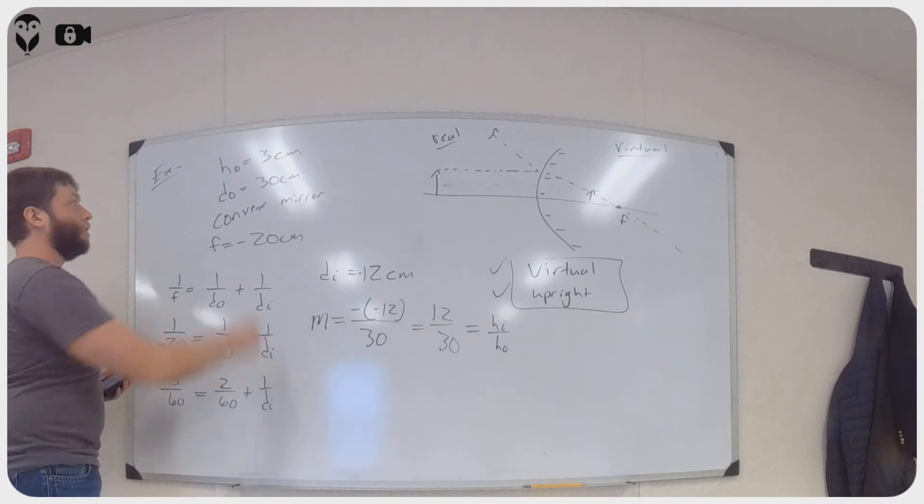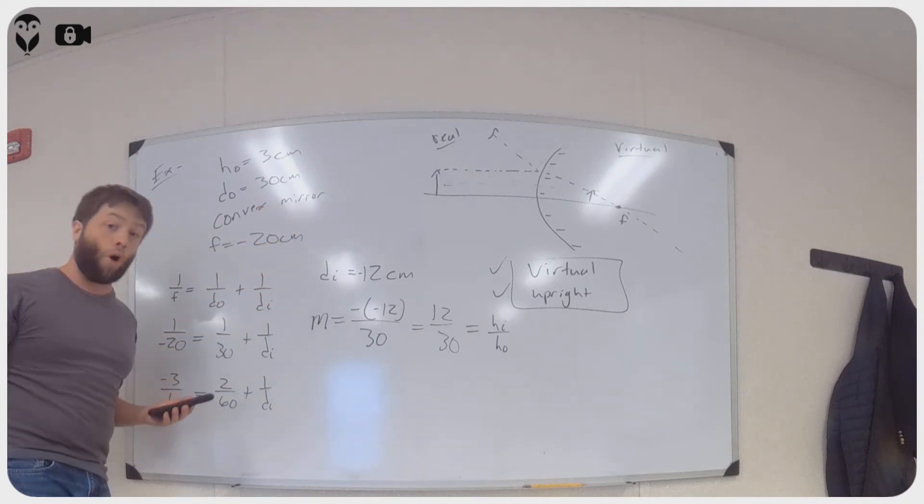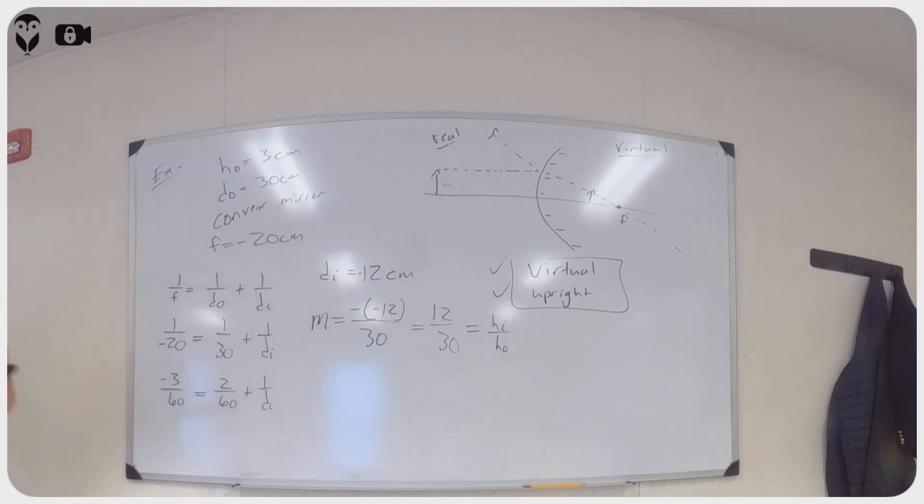You've got the height of the object is 3 centimeters. The distance of the object is 30 centimeters. It's a convex mirror. So as you all know, a convex mirror has a negative focal length. Okay, I'll stop now.